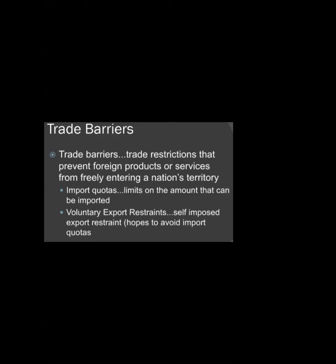Trade barriers are actually trade restrictions that prevent foreign products or services from freely entering a nation's territory. These are barriers placed on goods coming from foreign countries, so that when they come to our country, they become more expensive due to taxes or tariffs, and our local industry can compete with them.